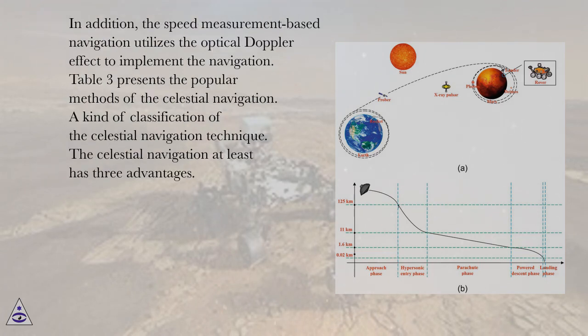In addition, the speed-measurement-based navigation utilizes the optical Doppler effect to implement the navigation. Table 3 presents the popular methods of the celestial navigation, a kind of classification of the celestial navigation technique.